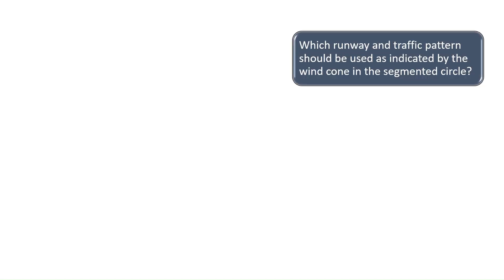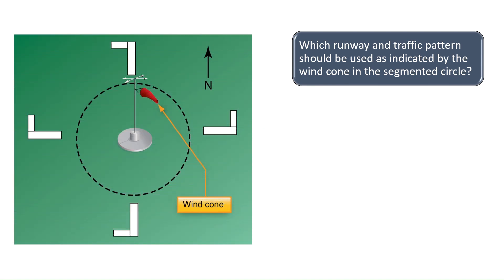Which runway and traffic pattern should be used as indicated by the wind cone in the segmented circle? To answer this question, let's draw the traffic patterns to help visualize. The left-hand traffic pattern for runway 3-6 is illustrated by the yellow arrows at the bottom of the chart. We know this is runway 3-6 since the north direction is illustrated by the letter N with the arrow at the top right of the image.